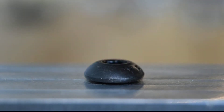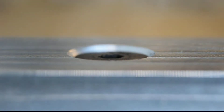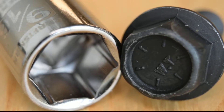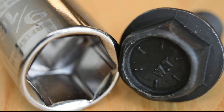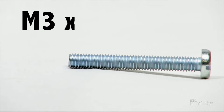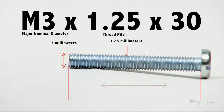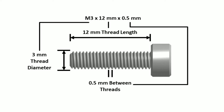The metric thread is also known as Unified National Thread or Unified Thread. The M designation for metric screw threads indicates the nominal outer diameter of the screw thread in millimeters. For example, an M3 bolt has a nominal diameter of 3 mm.